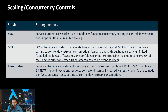Scaling and concurrency controls: SNS automatically scales, and you can use Lambda per-function concurrency settings to control downstream consumption - it's nearly unlimited scaling for standard SNS, with a high but slightly limited throughput for FIFO. SQS automatically scales as well; you can use Lambda trigger batch size and per-function concurrency settings to control downstream consumption, with nearly unlimited standard queue throughput. EventBridge automatically scales with default soft quotas of 100,000 transactions per second for put events and around 19,000 transactions per second for target invocations - these are soft limits that vary by region and can be increased.